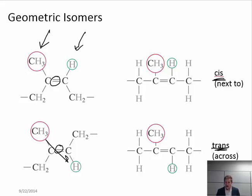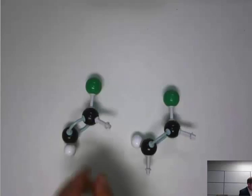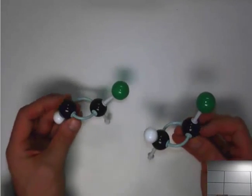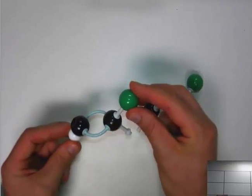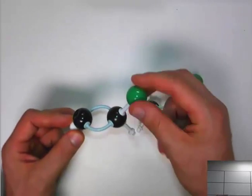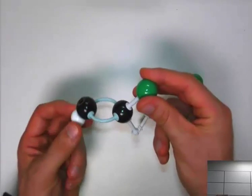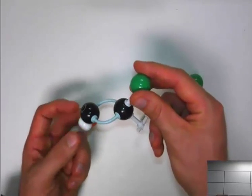Let's look at a couple examples on a 3D model. These are two different repeat units. In one case, I have the trans configuration. This side group is diagonally across the repeat unit from this side group.